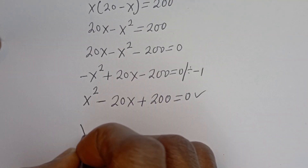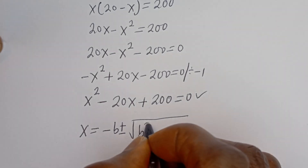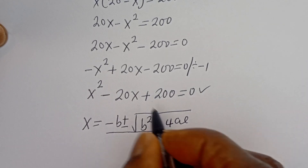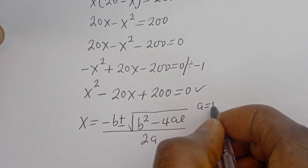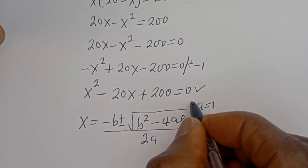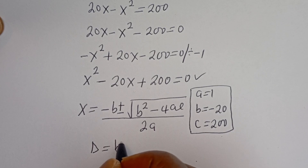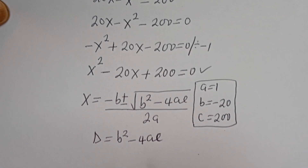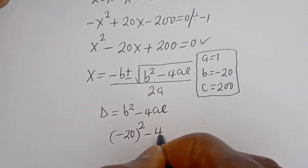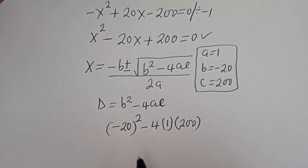Our quadratic general formula is given as X equals minus B plus or minus square root of B squared minus 4AC, divided by 2A. From this equation, A equals 1, B is equal to minus 20, and C is equal to 200.